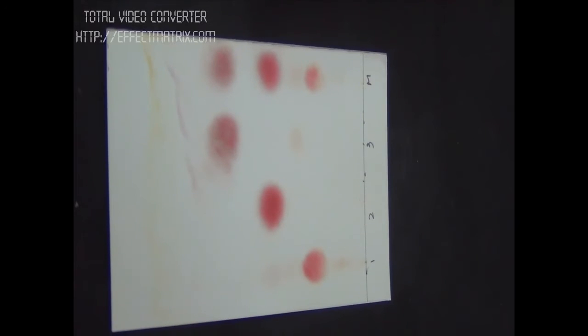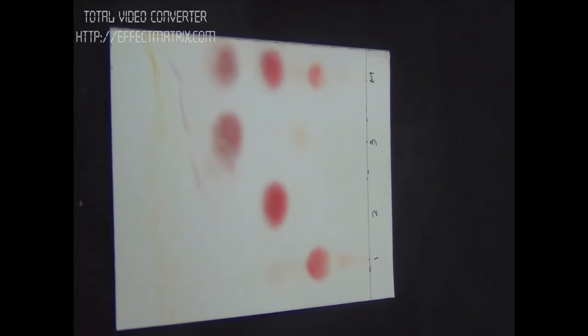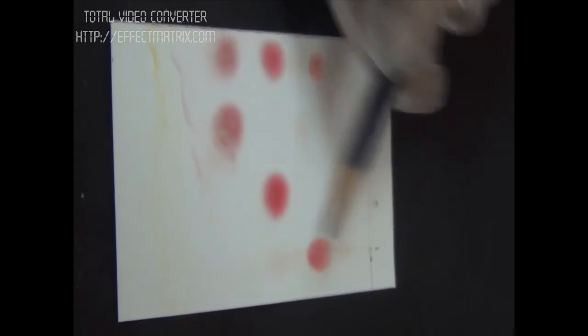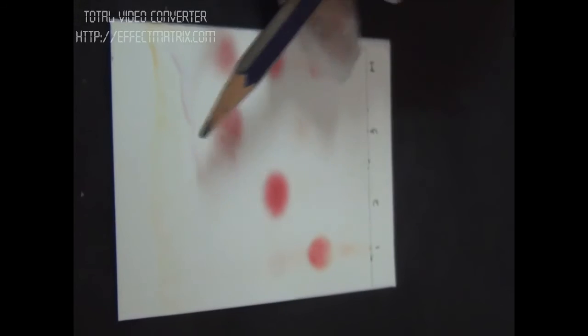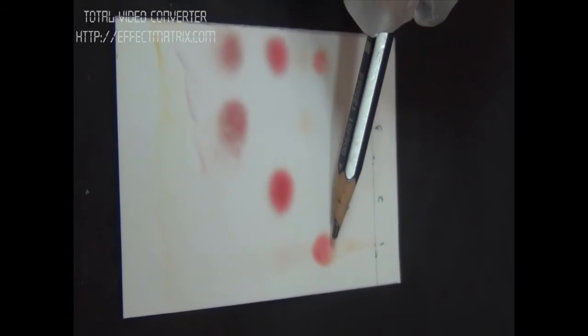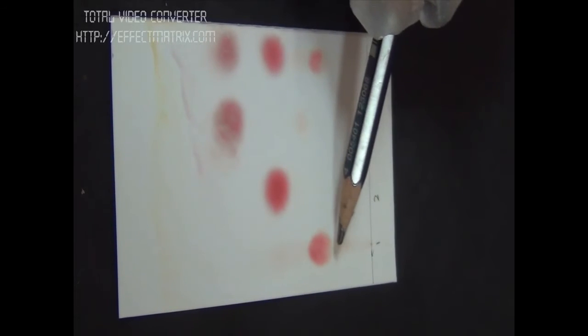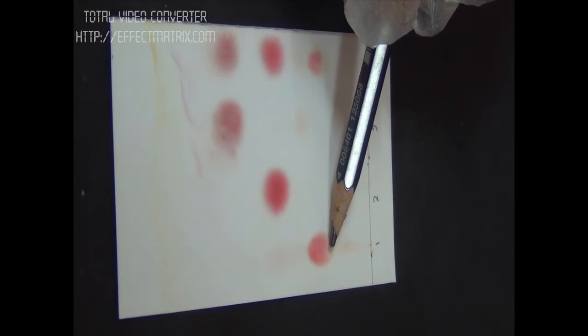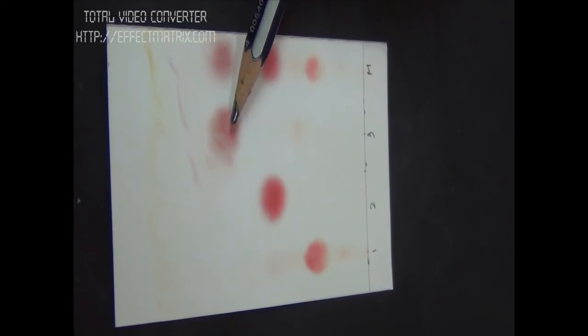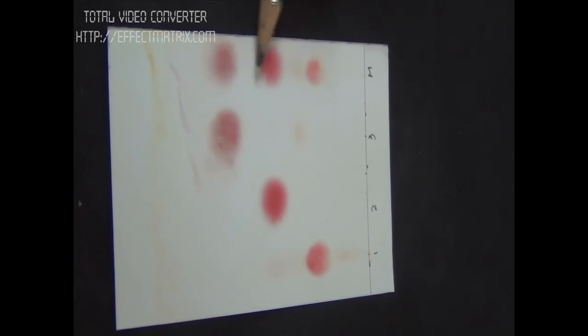Now we will calculate the Rf value. Rf value is the ratio of distance travelled by the spot from the line of origin to distance travelled by the solvent front. We will calculate the Rf value for all the spots we have detected. In the mixture and standards, we have one spot each in samples one, two, and three, and in the mixture we have three spots.